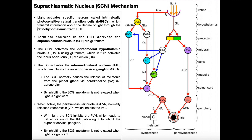The retinohypothalamic tract sends that information directly to the suprachiasmatic nucleus, or SCN. You've heard about the suprachiasmatic nucleus as being what regulates the circadian rhythm, and that makes sense because it's the first structure that receives any information about the degree of light.